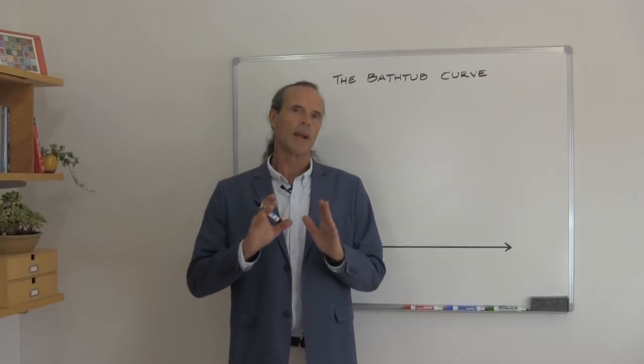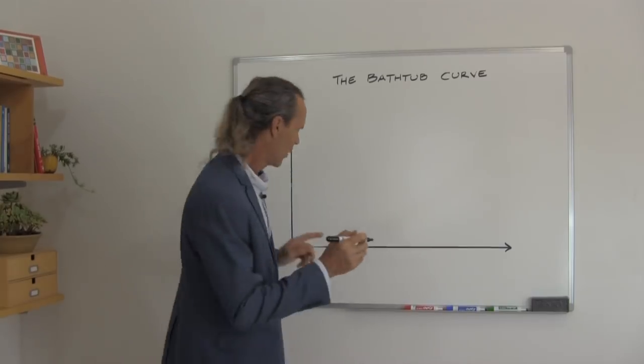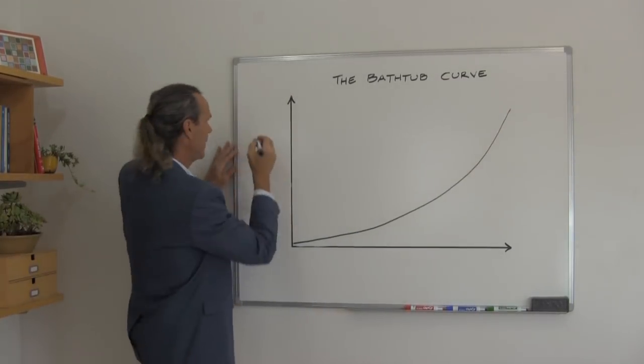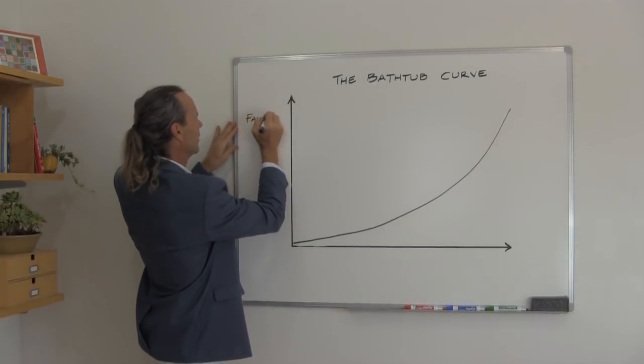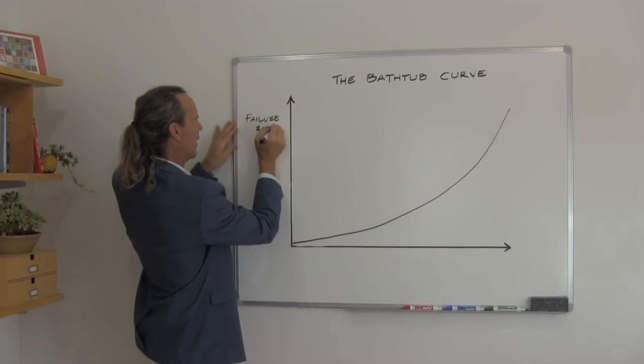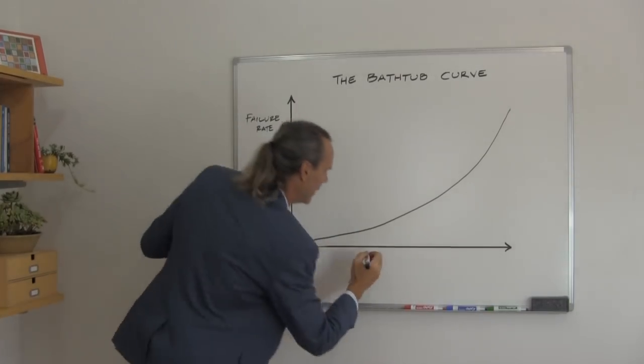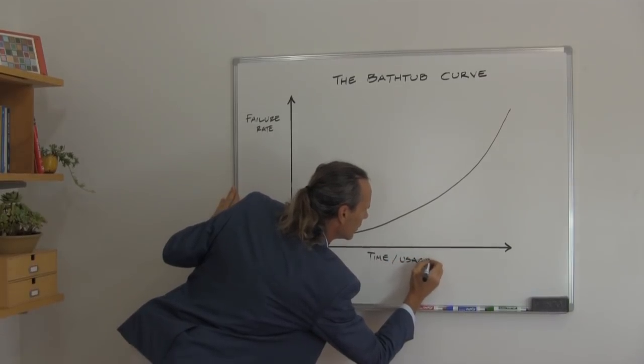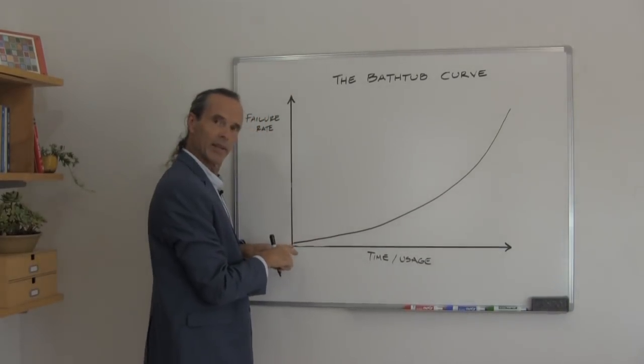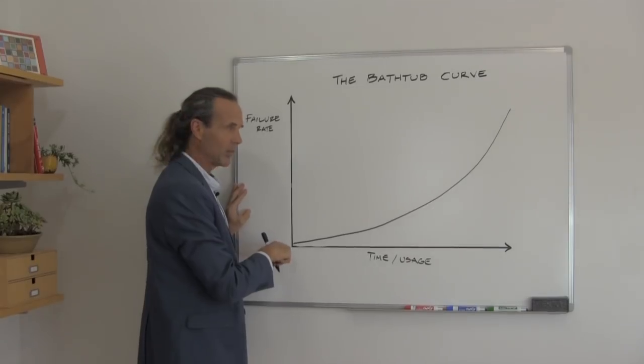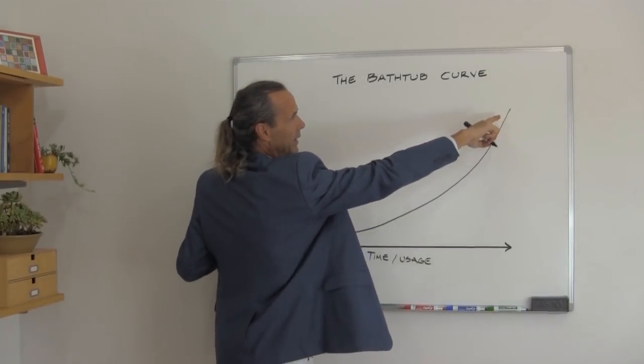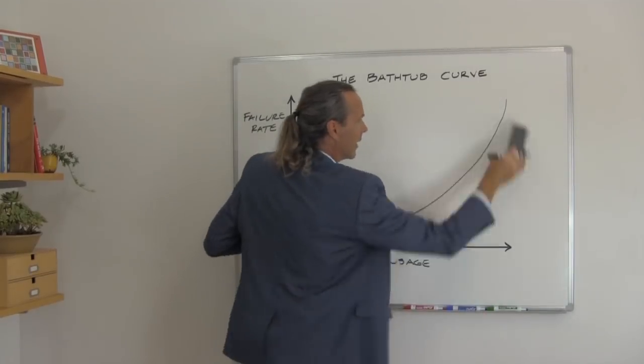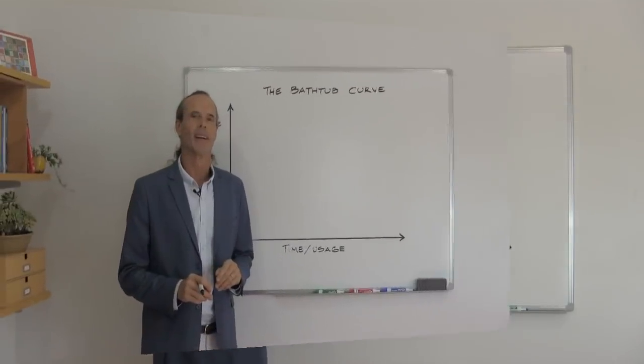If you were to graph the entire lifespan of a car, most people would think that the graph would be drawn like this: the vertical axis being the chance of failure or the failure rate, and the horizontal axis being time or usage. This graph is assuming that the car when new has no problems, and as time and usage go up, the chance of failure of any component in the car increases to the time that it's at the end of its lifecycle. This would be wrong.